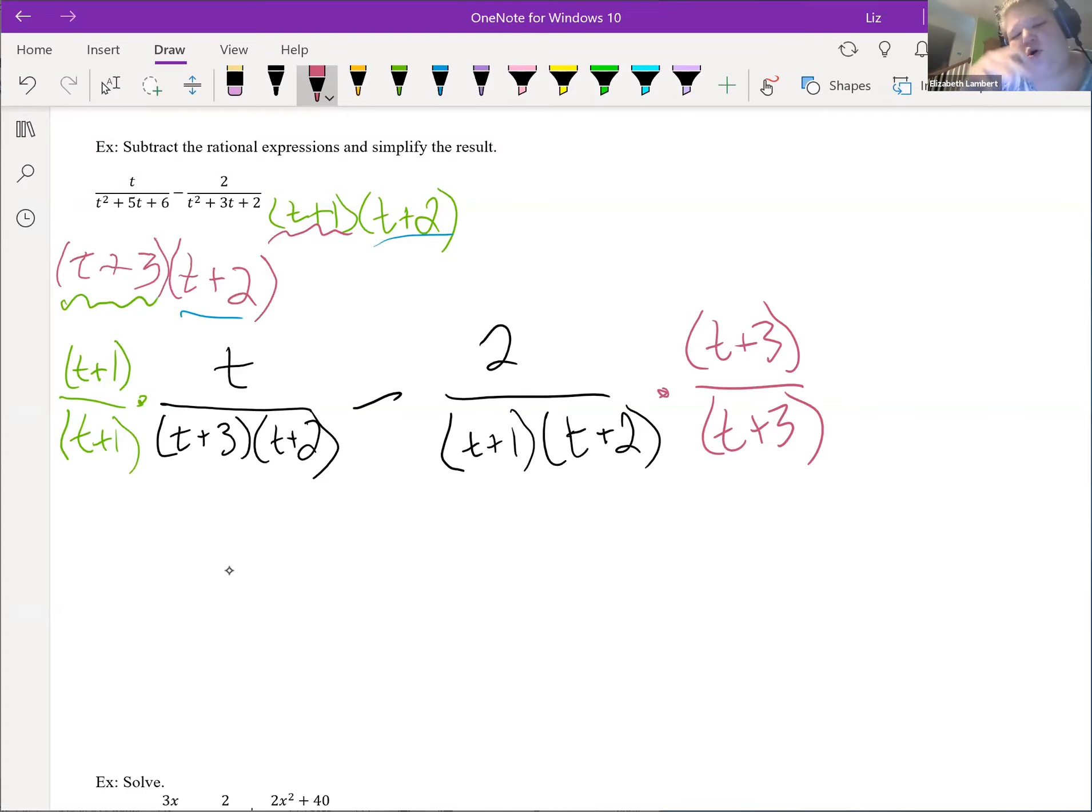Now, before you start distributing and clearing the parentheses, what I would recommend is actually write it all as one fraction with that subtraction in there. Don't distribute anything because you're less likely to make a mistake if you do that. So our bottom here has t plus 1, t plus 2, and t plus 3. Don't multiply those back out. I know you guys can.